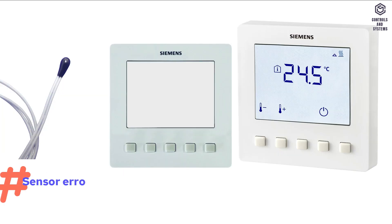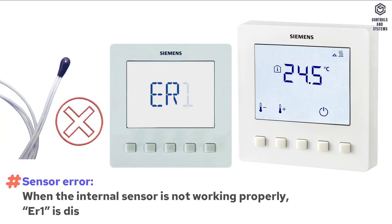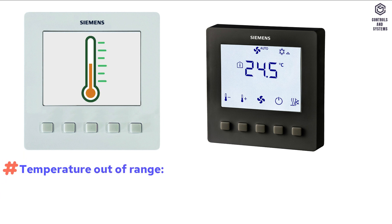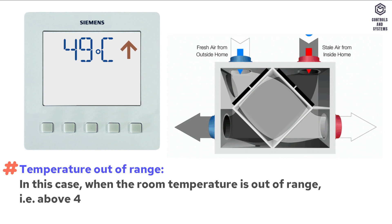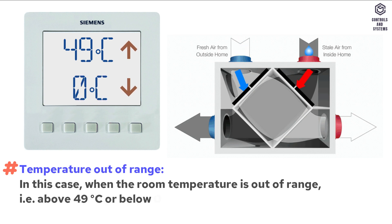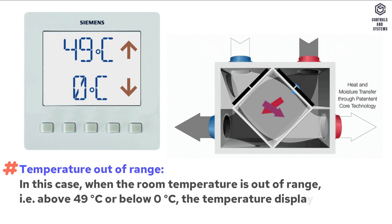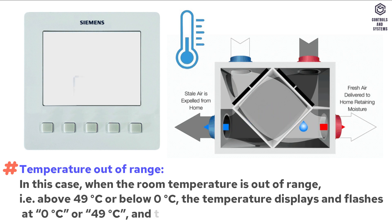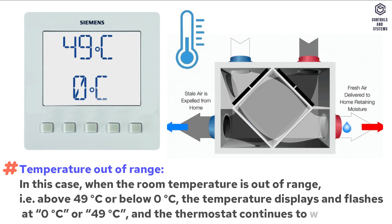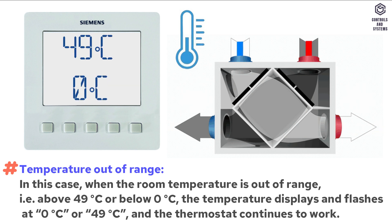Sensor error: when the internal sensor is not working properly, ERR1 is displayed. When the room temperature is out of range — that is, above 49 degrees Celsius or below 0 degrees Celsius — the temperature display flashes at 0 degrees Celsius or 49 degrees Celsius, and the thermostat continues to work.